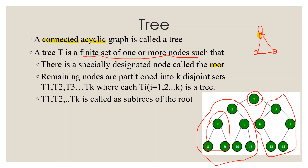This structure makes another tree. There is a specially designated root node, and all the nodes are partitioned into K disjoint sets. These partitioned sets are our subtrees.